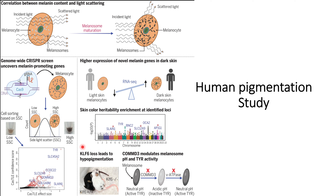From the genes that promote melanosomes, they chose two candidates to verify their results. First, they knocked down KFL6 in mice and observed hypopigmentation in the KFL6-negative mouse. This is in line with their CRISPR genome-wide screen results, confirming that KFL6 promotes melanosome formation.